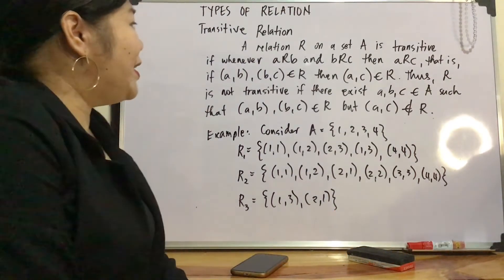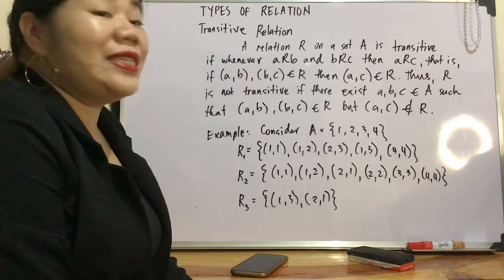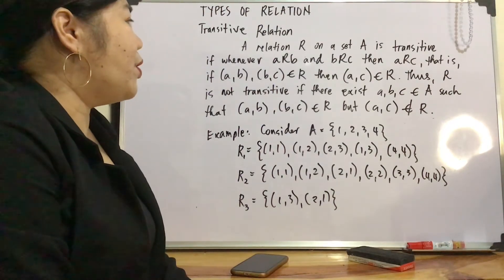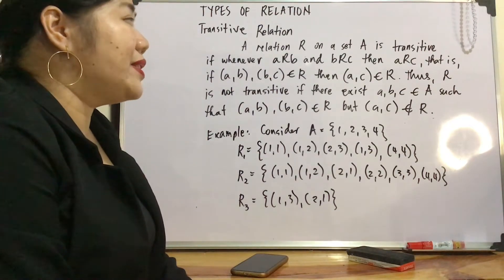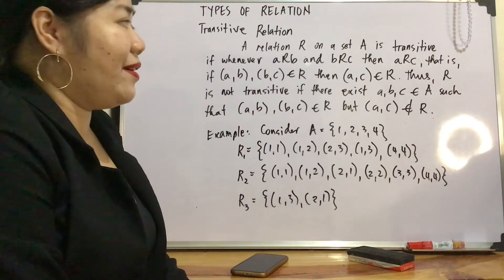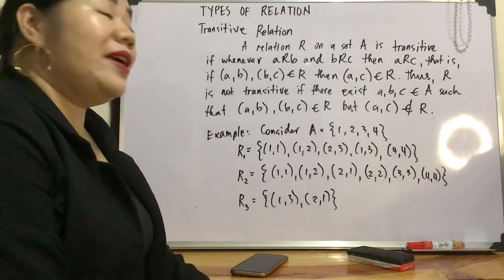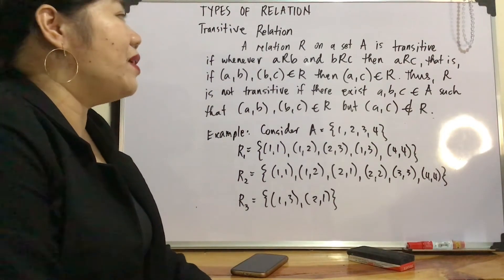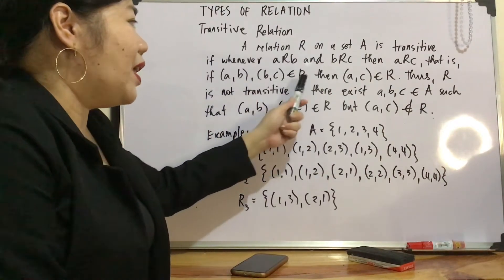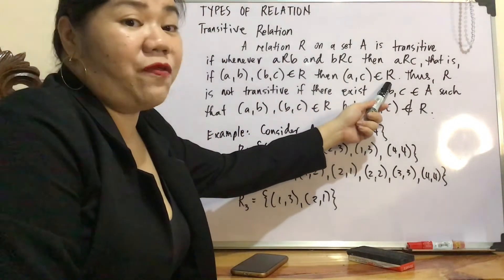Let's define first. A relation R on a set A is transitive if whenever aRb and bRc, then aRc. That is, if (a,b) and (b,c) are elements of R, then (a,c) must be an element of R too.